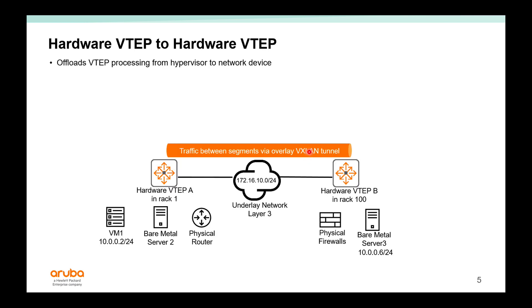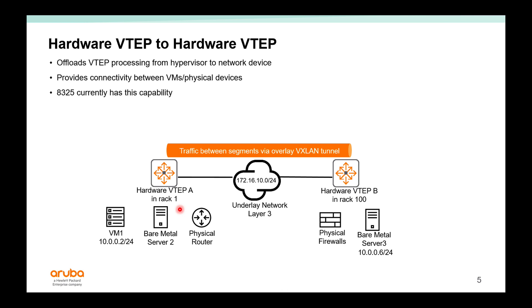In a hardware VTEP to hardware VTEP use case, this supports servers that are not VXLAN-capable, but the network team would like to run VXLAN to support Layer 2 connectivity over a Layer 3 network. This provides connectivity for both VMs and physical devices such as routers in different racks. The Aruba CX 8325 currently has this capability.